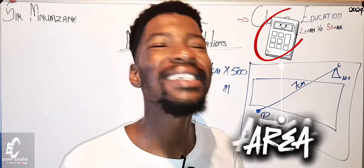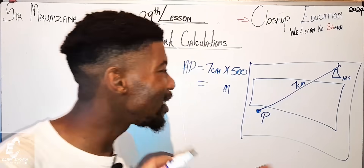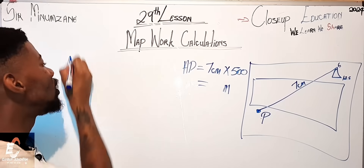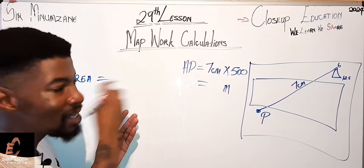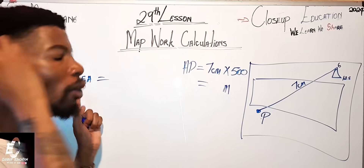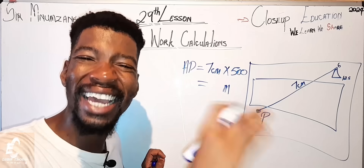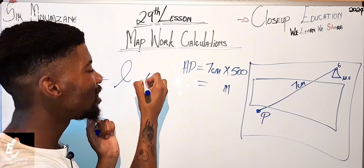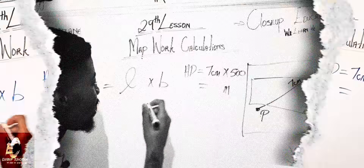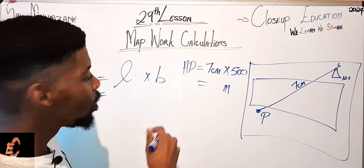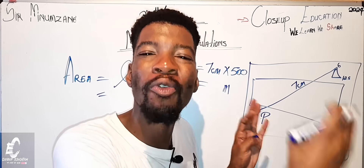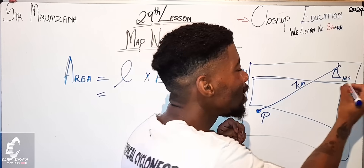Now maybe they say calculate the area of this region — that is a different calculation. Make sure you tell your teacher what you are calculating. For area, the formula is length times breadth. The length is the longest part of whatever you are calculating. You place your ruler and measure the longest side, then the shorter side.